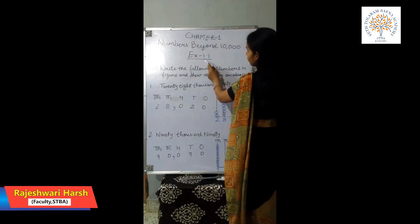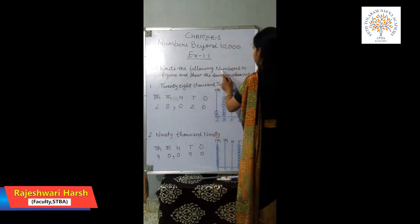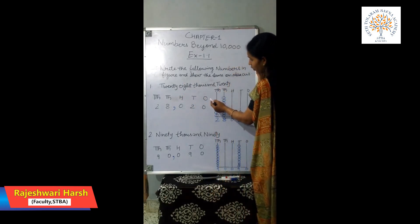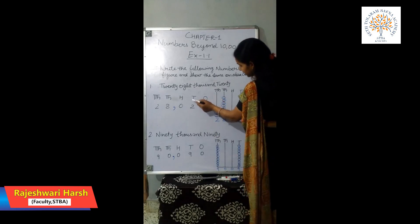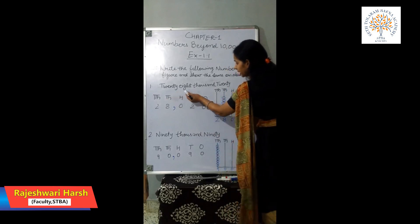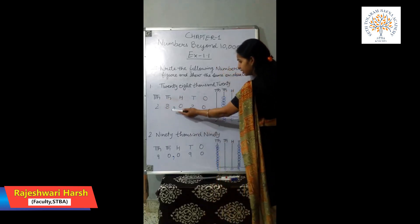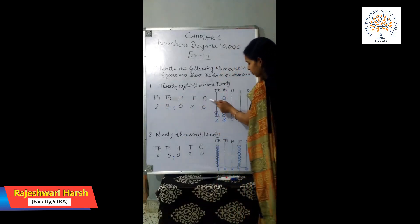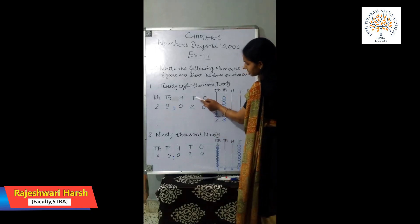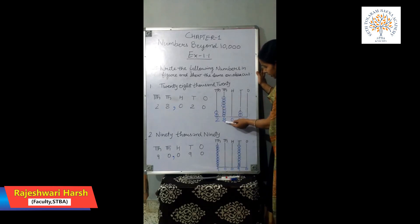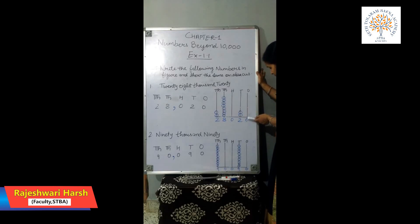We are going to start Exercise 1.1, Question 1: Write the following numbers in figures and show the same on the abacus. First: twenty-eight thousand twenty. In the place value chart, 28 thousand means 2 is in the ten thousands place and 8 is in the thousands place. Twenty means 2 is in the tens place and 0 in the ones place. There is no digit in the hundreds place, so write 0 there. On the abacus, draw 2 beads on ten thousands, 8 beads on thousands, 2 beads on tens, and no beads on hundreds or ones.